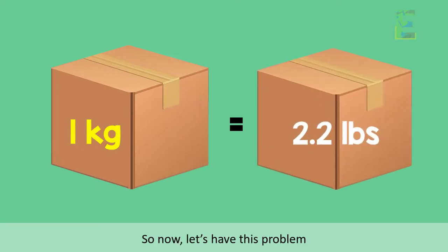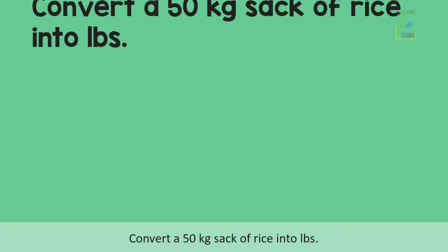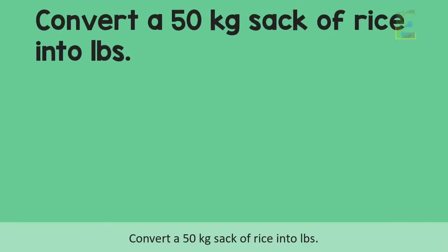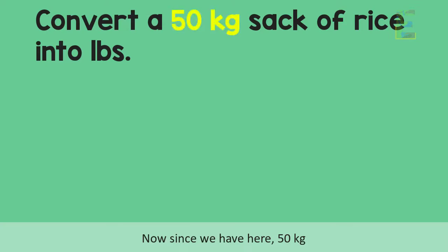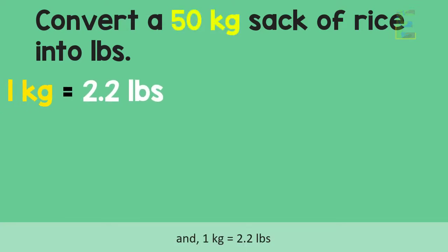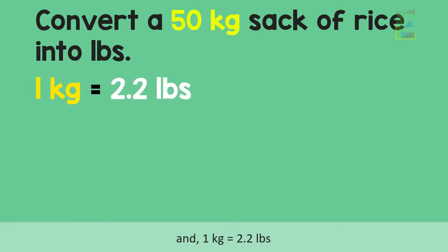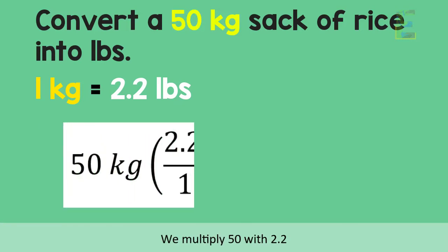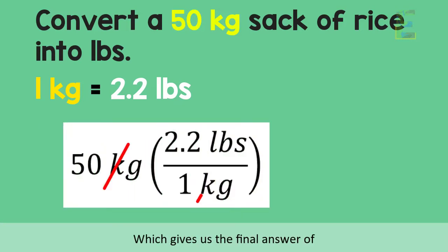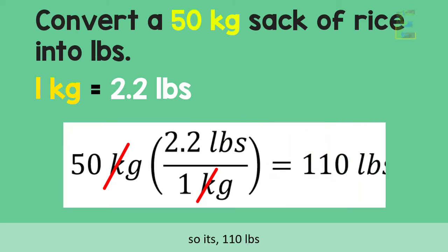So now, let's have this problem. Convert a 50 kilogram sack of rice into pounds. Since we have 50 kilograms and 1 kilogram is equal to 2.2 pounds, we multiply 50 by 2.2, which gives us the final answer of 110. So, it's 110 pounds.